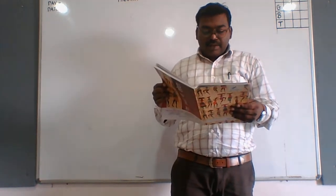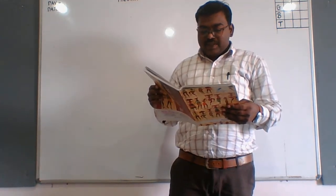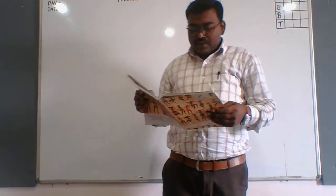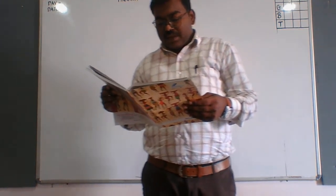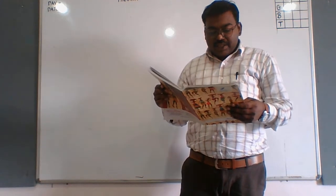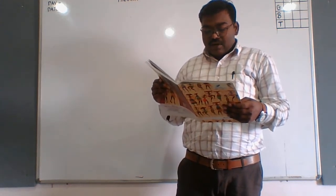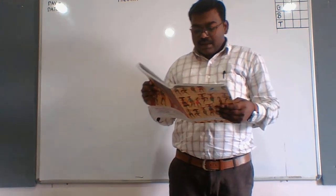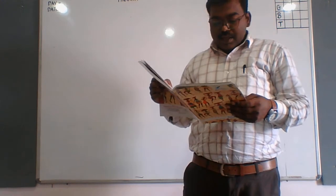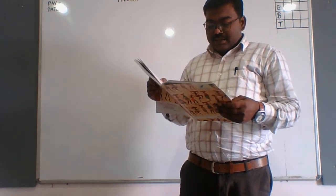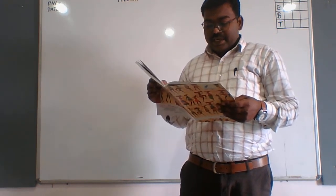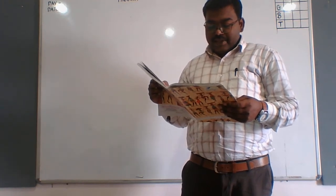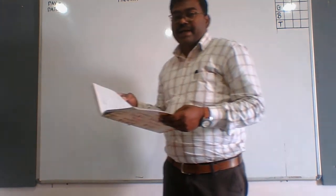The question is: the parallel sides of the trapezium are in the ratio 3 is to 4. If the distance between the parallel sides is 9 dm and its area is 126 dm square, find the length of its parallel sides.